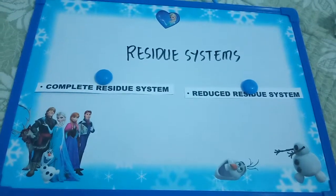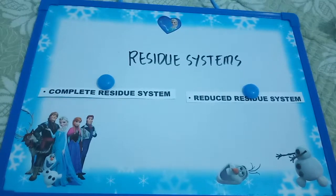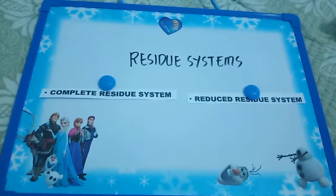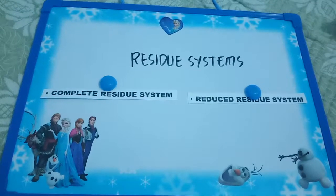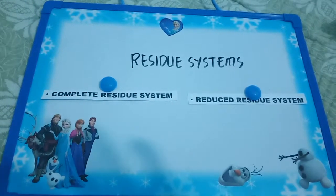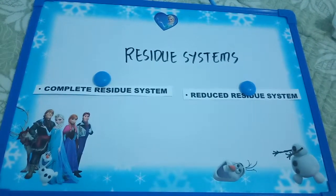In this video we're going to talk about residual systems. Residual systems have to do with arithmetic and they are basically sets of integers which give you a complete remainder set. We have two terms to differentiate now: the complete residual system and reduced residual system.